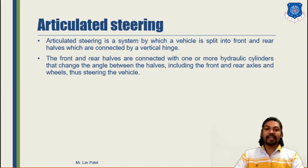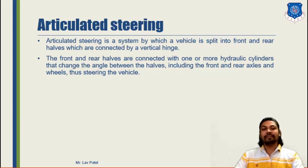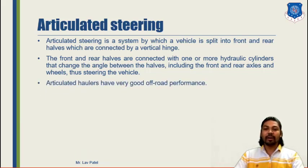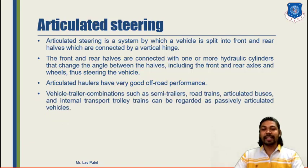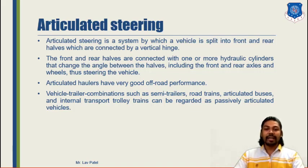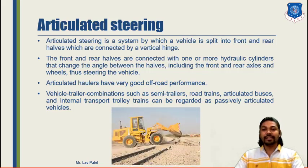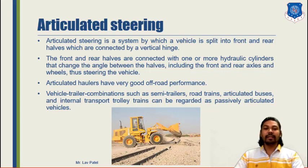In articulated steering, the front and rear halves are connected by one or more hydraulic cylinders that change the angle between the halves — including the front and rear axle wheels — thus steering the vehicle with less driver effort. Articulated haulers have very good off-road performance. Vehicle and trailer combinations such as semi-trailers, road trains, articulated buses, and internal transport trolley trains can be regarded as passively articulated vehicles.